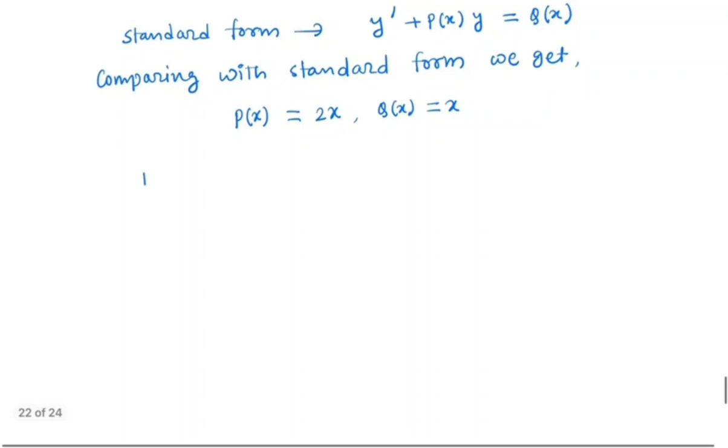So we know that the integrating factor I(x) is e to the power of integral p(x)dx, so e to the power of integral 2x dx, which is e to the power x squared.